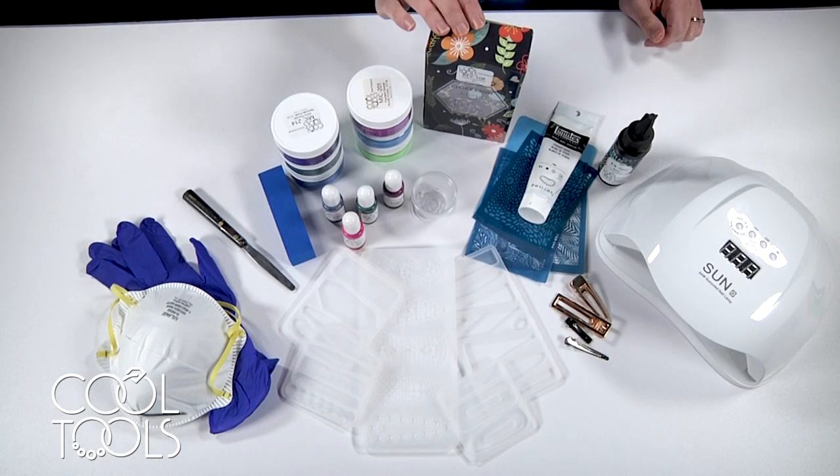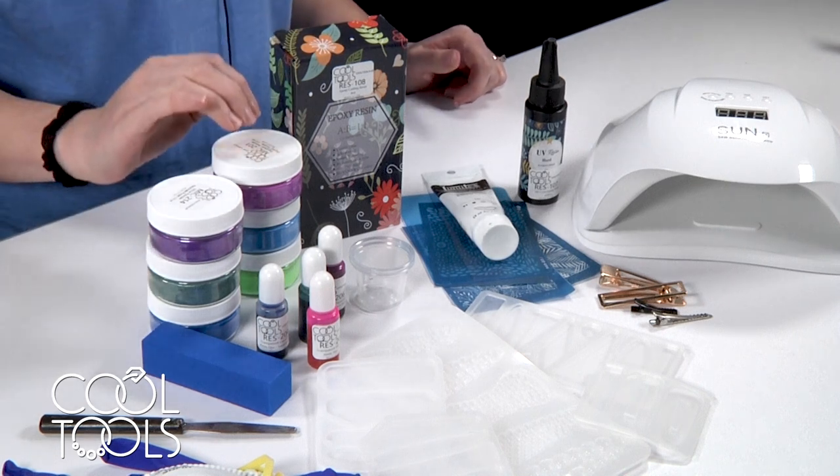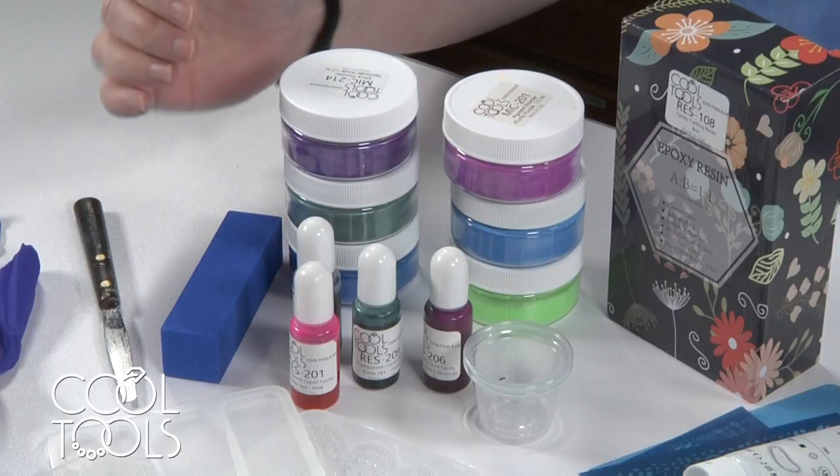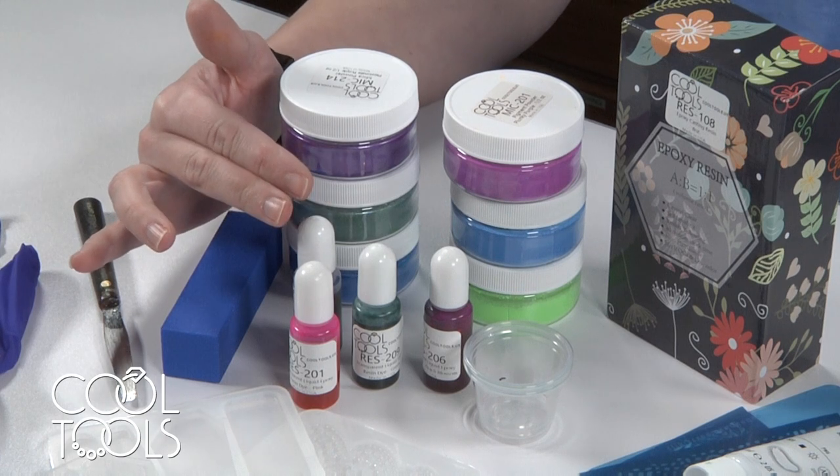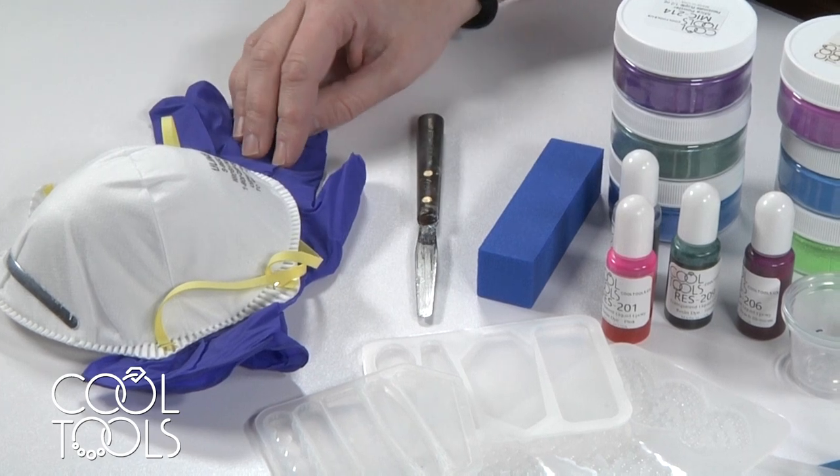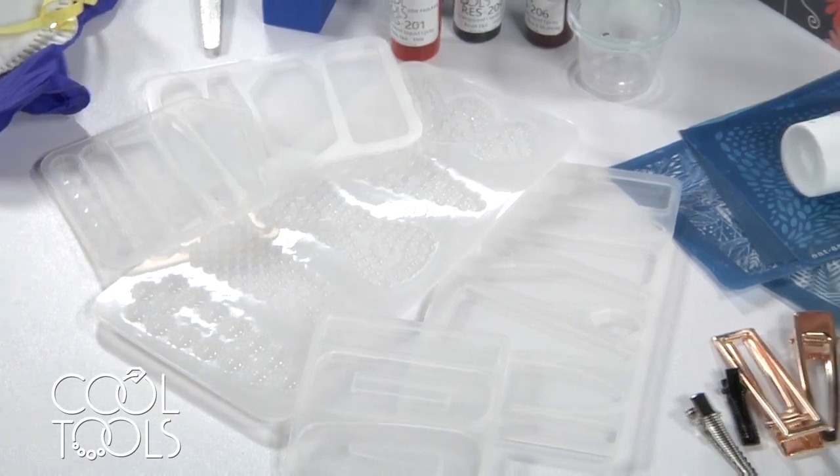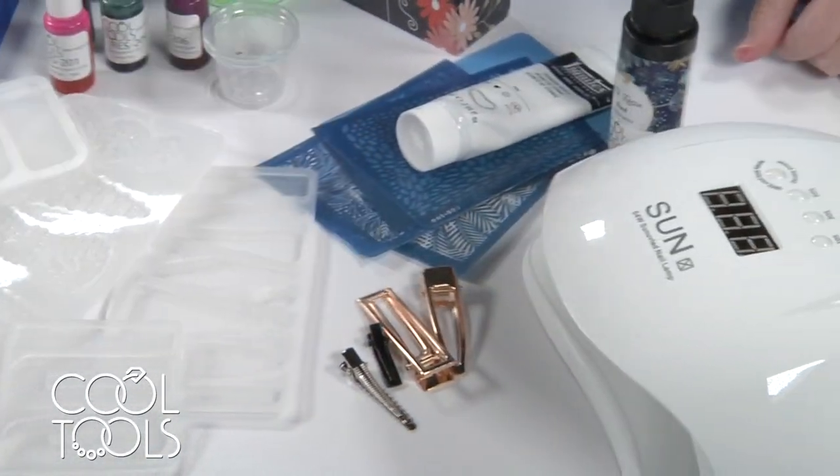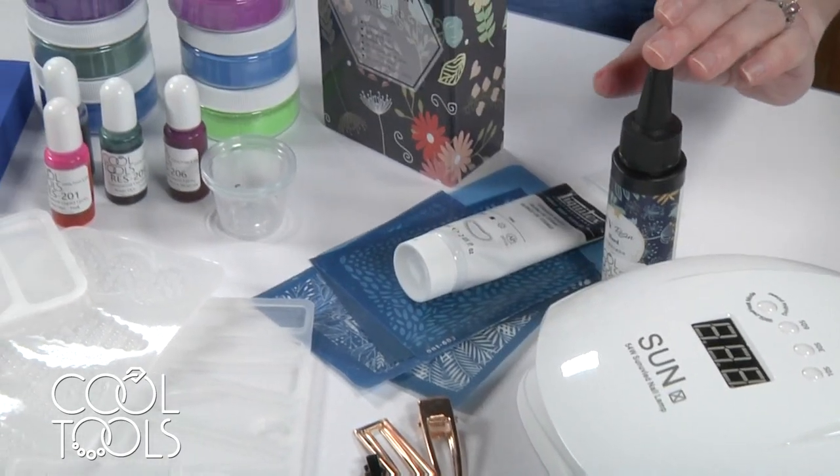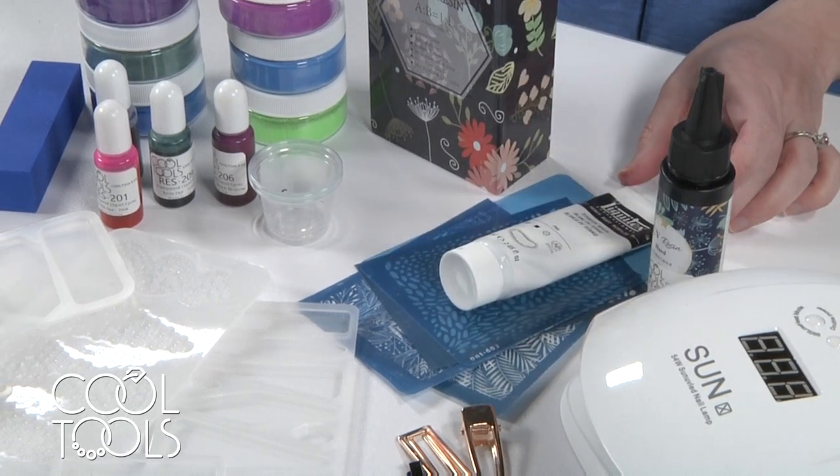Here's what you need for this project: some casting resin and something to pigment your casting resin. If you want your barrettes to be opaque you can use these pigment powders, if you want them to have some sparkle you can use these mica powders, or if you want a transparent barrette you can use these resin dyes. You're also going to need a sanding block, a mini palette knife, some rubber gloves and a respirator mask, some barrette casting molds, and then some barrette clip findings, a UV resin curing lamp, some UV resin, some silk screens, a silk screen squeegee, and then any acrylic paint.